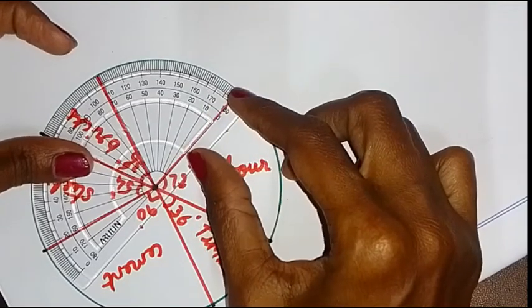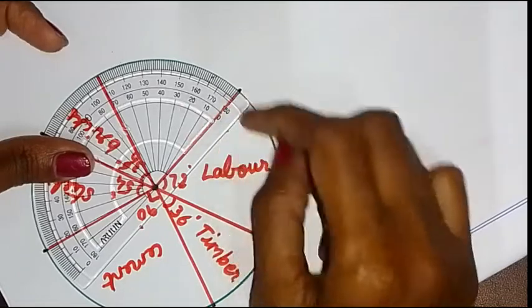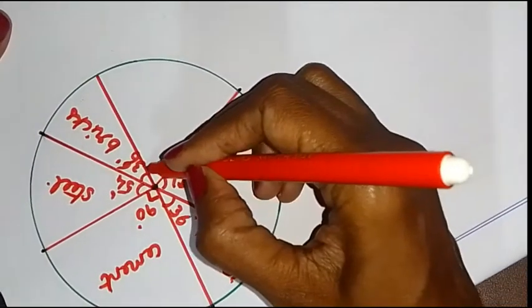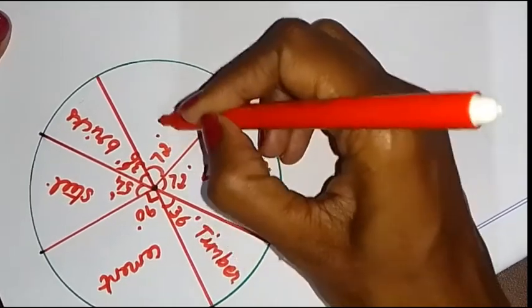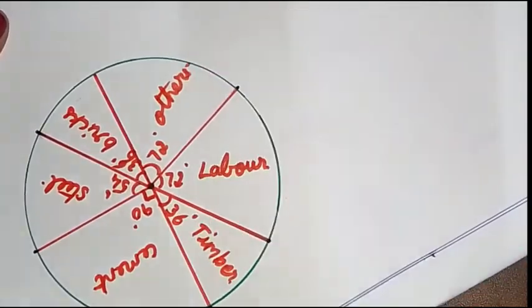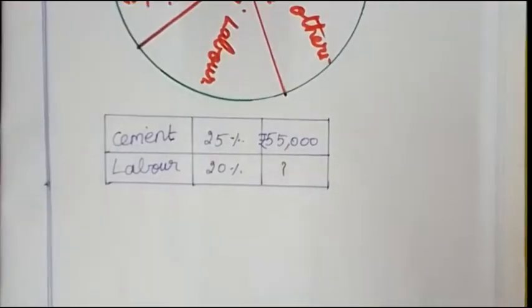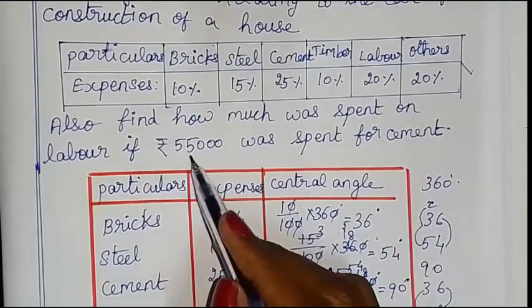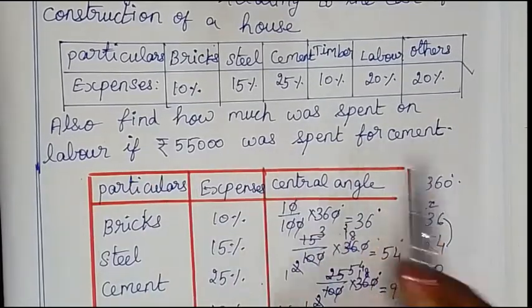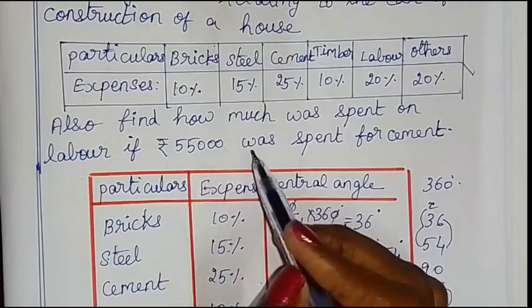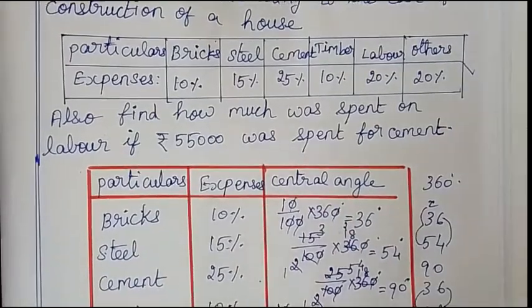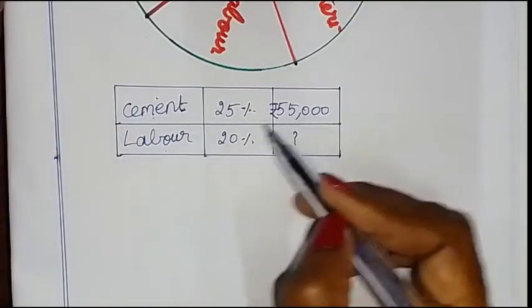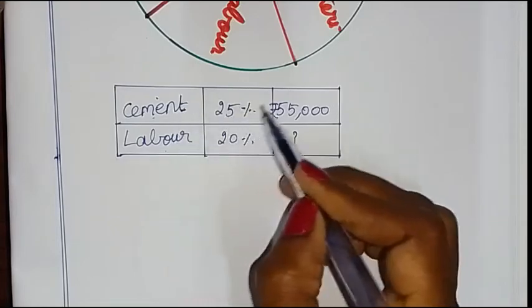Now 72 degrees — others. Also find how much was spent on labor if rupees 55,000 was spent for cement. So cement: 55,000 rupees spent. Labor — tabular column: cement, labor. Cement 25%, cost 55,000. Labor 20% — spend now.